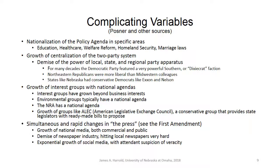The last thing I want to talk about is complicating variables in this coercive mandate relationship. I named four important ones. We talked about the Federalist Papers, the Constitution, and what the founders had in mind in terms of the federalism relationship — a relationship where each sphere had a set of policy domains it's responsible for. The states had things they're responsible for, the national government had things it was responsible for, but things have changed, and these four variables are complicating.